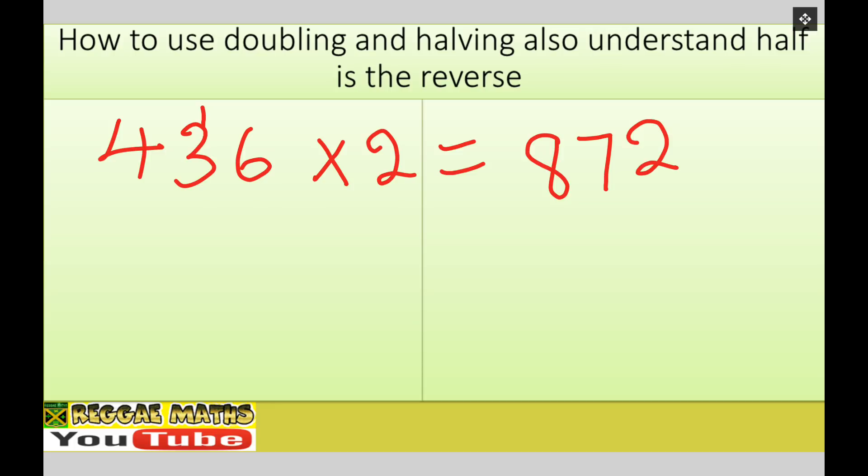Let's half it, and then I'm going to show you the bus stop method. So we got 872, right, divide by two. So two into eight goes four times, two into seven goes three times remainder one, and two into twelve goes six times. So you can see halfing and doubling, right, the opposite of each other.